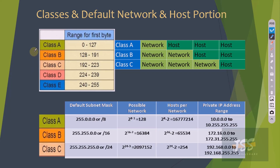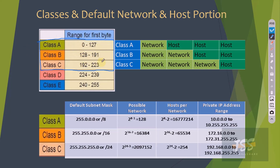Every class has its own range. The total bytes start from zero all the way to 255, and this is divided into multiple classes. Class A starts from 0 to 127, Class B from 128 to 191, Class C from 192 to 223, Class D from 224 to 239, and Class E from 240 to 255. The most well-known classes — A, B, and C — are the IP addresses used in our local area network environment.